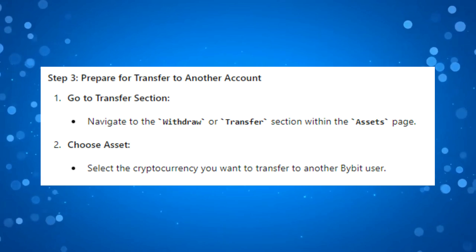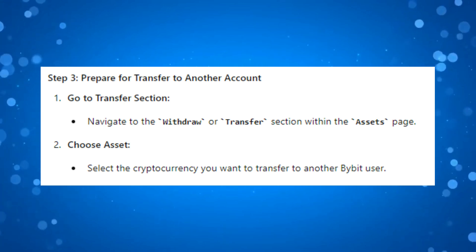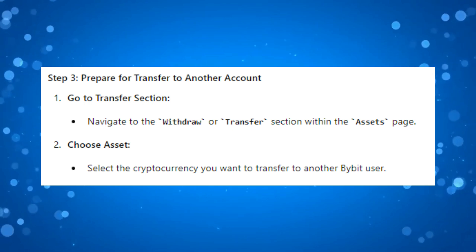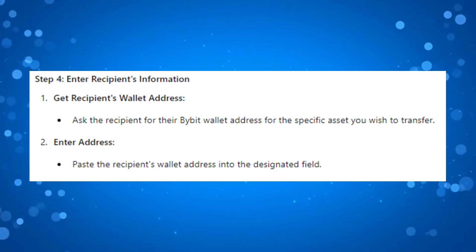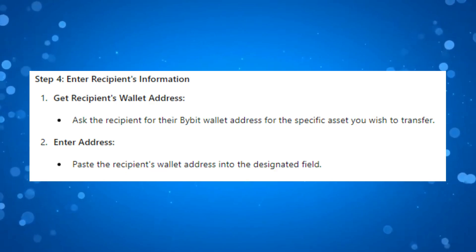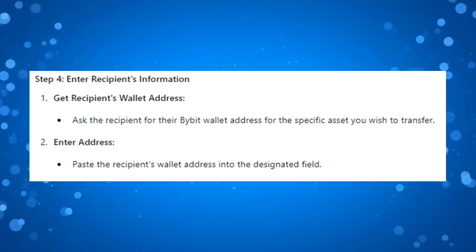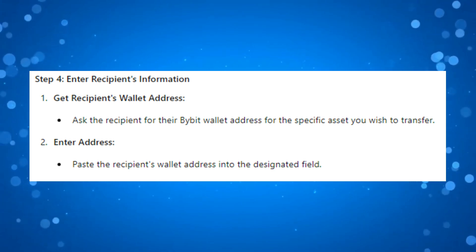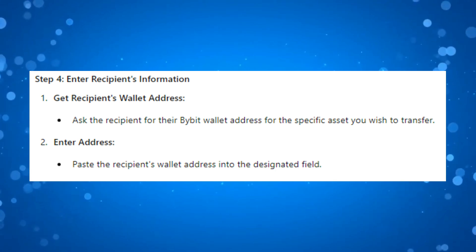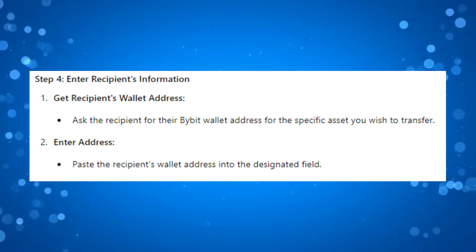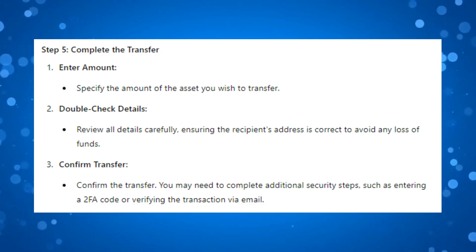Once you've done that, navigate to the withdrawal or transfer section within the assets page, then select the cryptocurrency you want to transfer to another Bybit user. At this point, you need to get the recipient's wallet address — ask the recipient for the Bybit wallet address for the specific asset you wish to transfer. Once you've got the address, paste it into the designated field and specify the amount of the asset you wish to transfer.